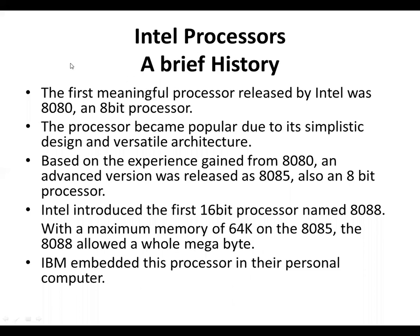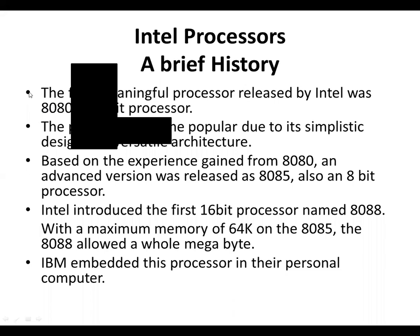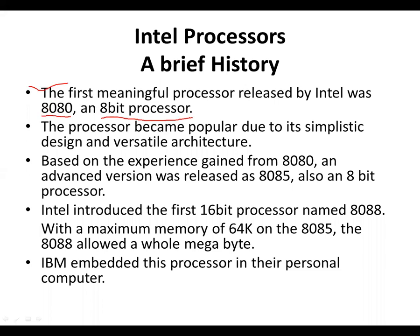Here we have a history. We are going to read the history of Intel processors. The first meaningful processor released by Intel was the 8080. This processor became popular due to its simplicity, design, and versatile architecture.